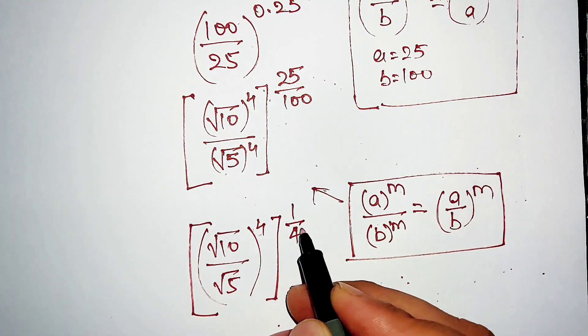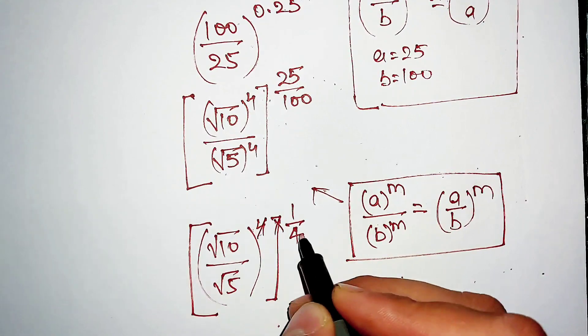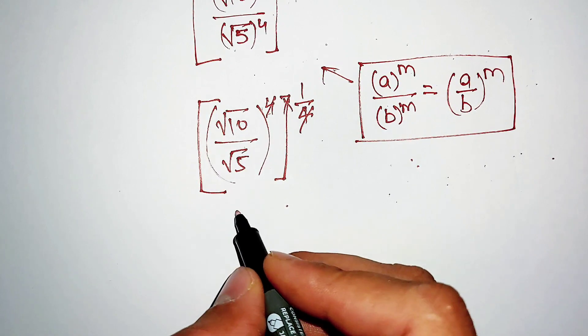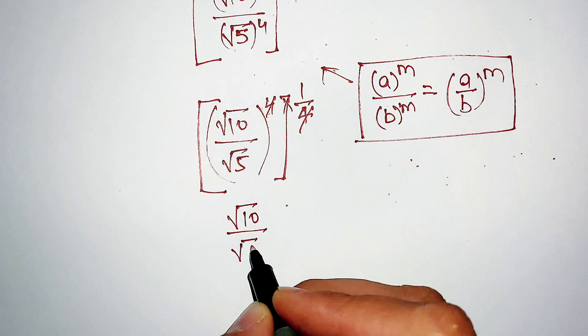Here this term and this term are in multiplication, then this 4 will cancel out this 4, and our expression will look like square root of (square root of 10 divided by square root of 5).